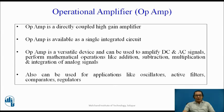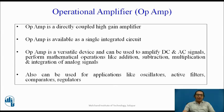What is an operational amplifier? Op-Amp is a directly coupled high gain amplifier, available as a single chip or single IC. It is a versatile device, can be used for DC and AC applications, and also for mathematical operations like addition, subtraction, multiplication, and integration. It can be used to design oscillators, active filters, comparators, regulators, and many more other circuits.